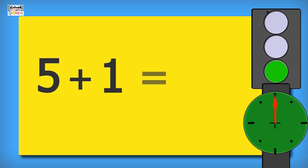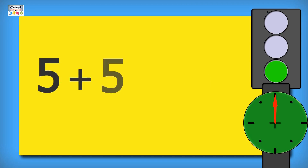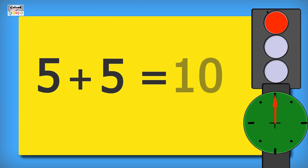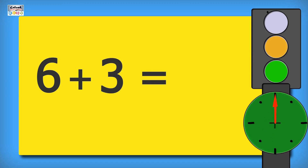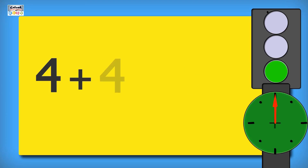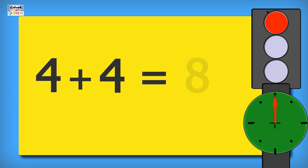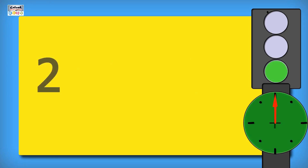Five plus one is equal to six. Five plus five is equal to ten. Six plus three is equal to nine. Four plus four is equal to eight. Two plus five is equal to seven.